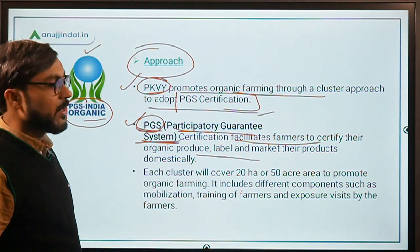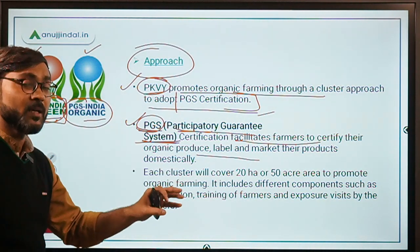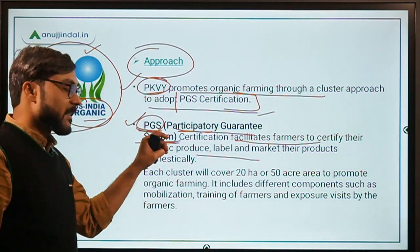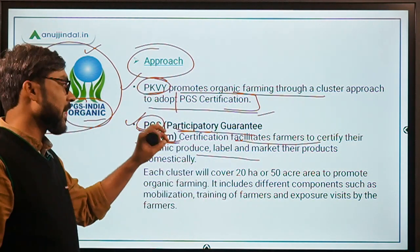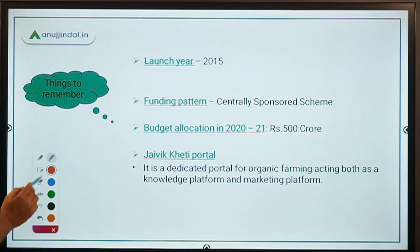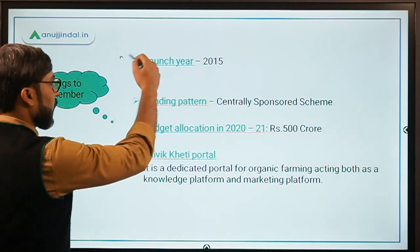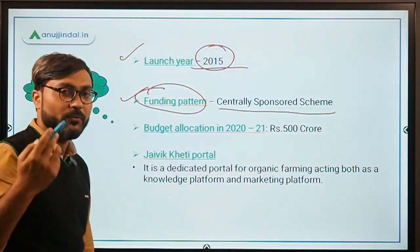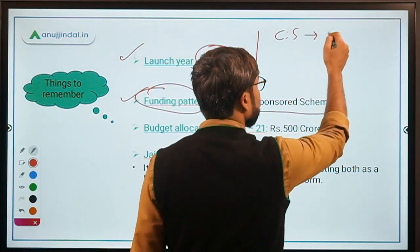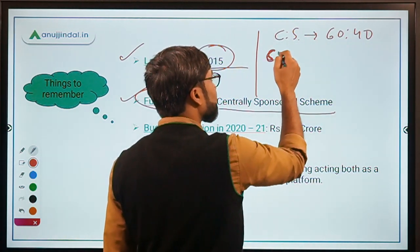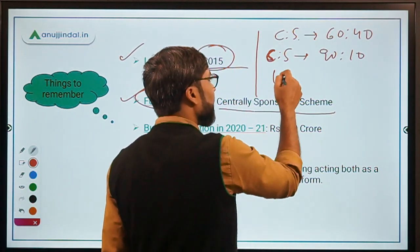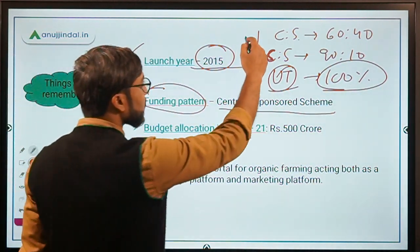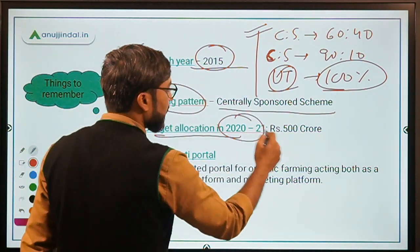This is the basic approach the government is following to promote organic farming. Just remember: the farmer has to take the PGS certification, and PGS stands for Participatory Guarantee System. The scheme was launched in 2015. It is a Centrally Sponsored Scheme, so the funding ratio between Center and State is 60:40. For northeastern or Himalayan states, the ratio is 90:10, and for Union Territories, it is 100% funding from the central government.